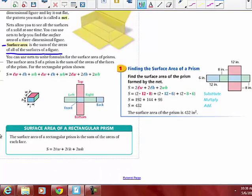You can use nets to write formulas for the surface area of prisms. The surface area S of a prism is the sum of the areas of the faces. For the rectangular prism shown, you can see that it's length times width plus length times height plus width times height plus length times width plus length times height plus width times height. That's the well-known formula for surface area of a prism, which you can see is listed here.